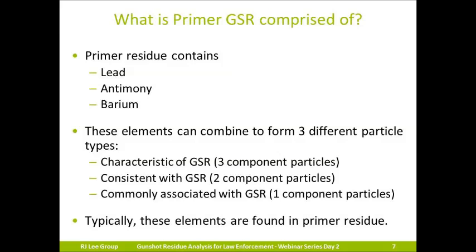Three-component particles are what we refer to as characteristic of gunshot residue — they are highly specific to the discharge of a firearm. We must see all three elements, lead, antimony, and barium, present together in the same particle for it to be considered highly specific to gunshot residue. In addition to the correct elements, we must also see the correct shape or morphology. The particles must be round or molten, as if heat-treated, since the discharge of a firearm is a very high-heat reaction. These are the particles that must be present for a population to be considered gunshot residue.